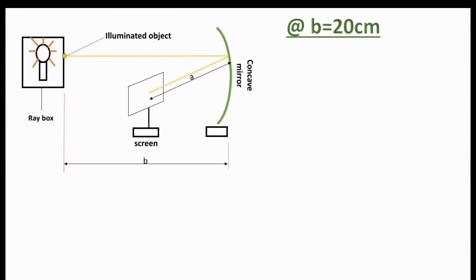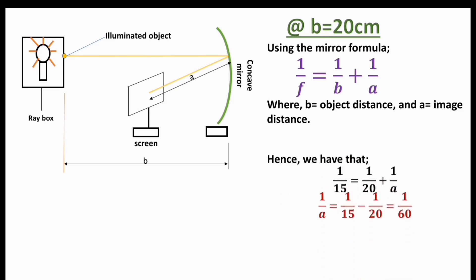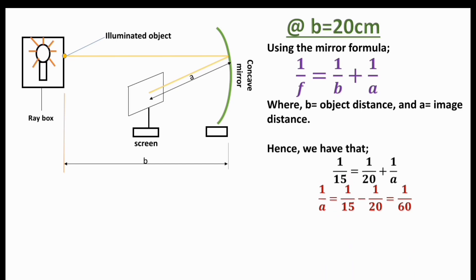For the first reading, when the distance b is 20 centimeters, we use the mirror formula: one over f equals one over b plus one over a — where b represents u (object distance) and a represents v (image distance). So we have one over 15 equals one over 20 plus one over a. Simplifying, one over a equals one over 60.